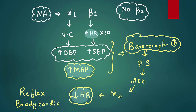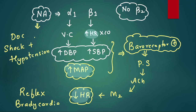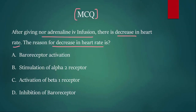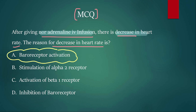Please remember: when we infuse noradrenaline, it increases all types of BP, followed by decrease in heart rate. Since it increases all types of BP, it is the drug of choice for shock with hypotension — any shock with hypotension. But one condition: one type of shock where noradrenaline is not effective — comment your answer in the comment box. Coming back to the question: decrease in heart rate after noradrenaline infusion is because of activation of baroreceptors. The answer is option A.